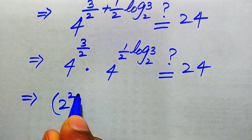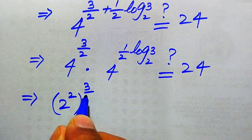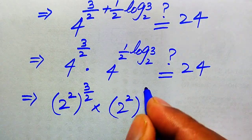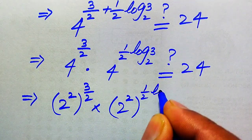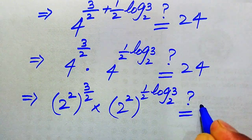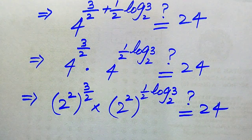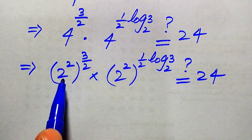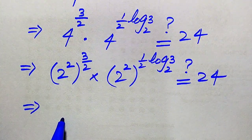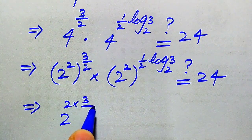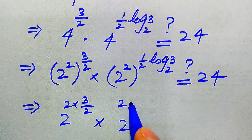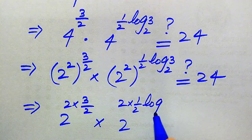So we have 2 squared with whole exponent 3 over 2, multiplied by 2 squared with whole exponent 1 over 2 times log base 2 of 3. We check if this equals 24. Since we have exponent to an exponent, these exponents multiply, giving 2 to the power of 2 times 3 over 2, and 2 to the power of 2 times 1 over 2 times log base 2 of 3.